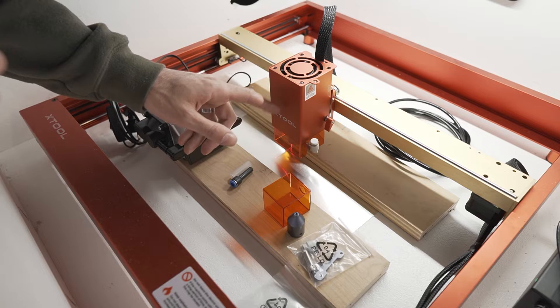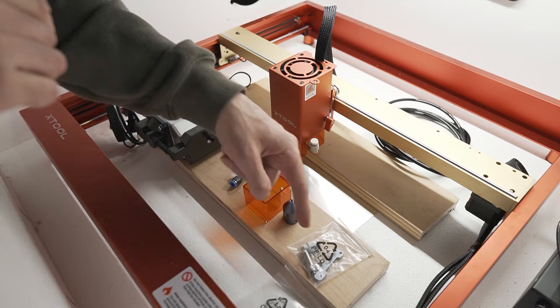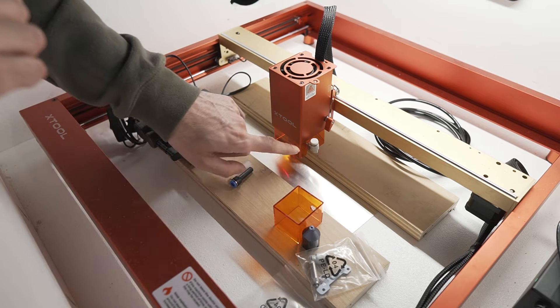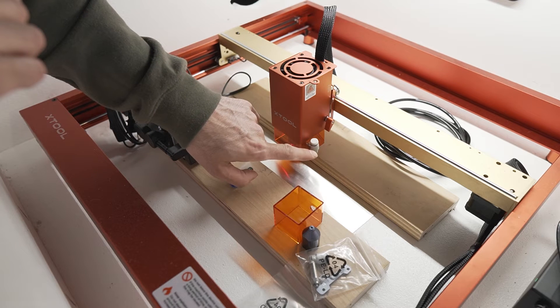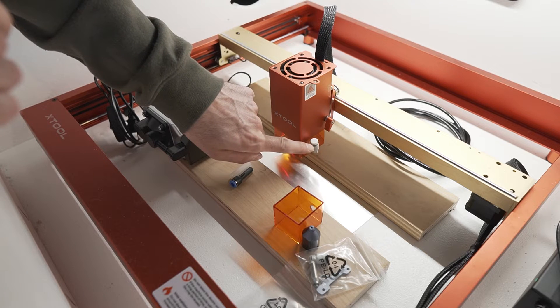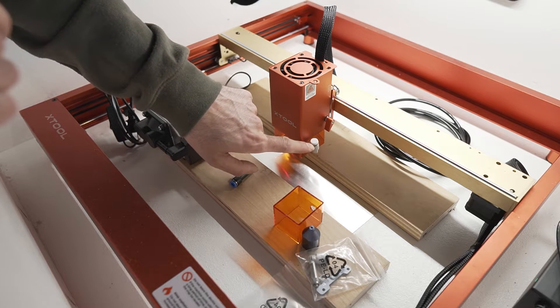Now I have the 20 watt D1 Pro laser so I don't need any of these accessories that were included with the Air Assist because this laser is already set up to accept the Air Assist. It has the tube bracket up here and the nozzle already installed.